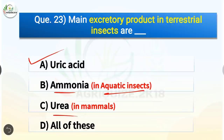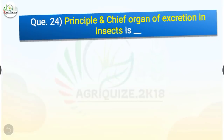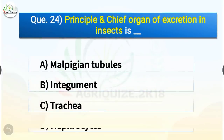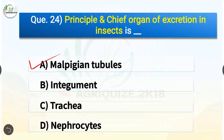Question number 24. The principal and chief organ of excretion in insects is what? The options are Malpighian tubules, integument, trachea, or nephrocytes. The correct answer is option A, Malpighian tubules. The principal and chief organ of excretion in insects is Malpighian tubules.